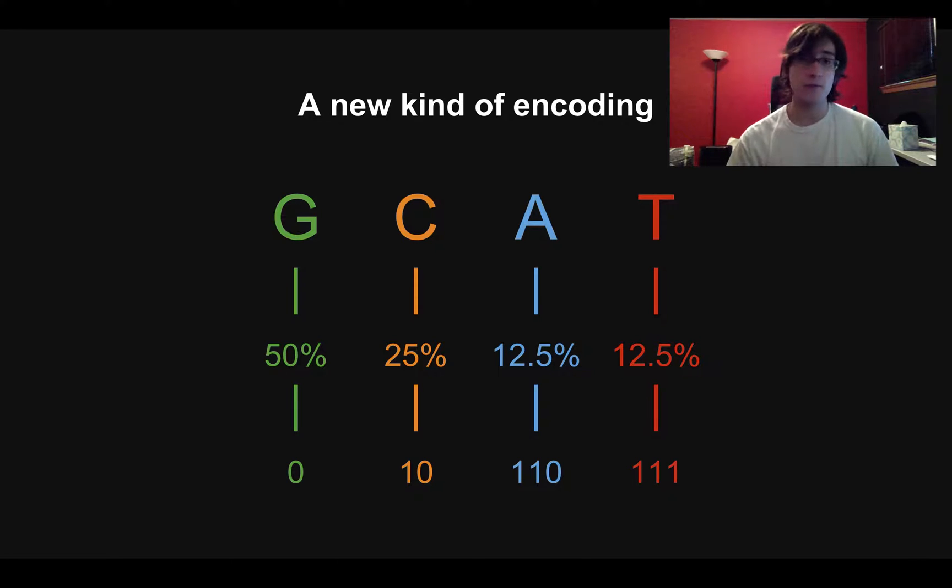And at first this might seem a little weird because I said G was zero. Like, so if you're encoding data and you see a G, you write a zero. You send a zero as the next bit. But then other things have zeros in them. Like, C has a zero in it. A has a zero in it. So how is this actually a valid code?